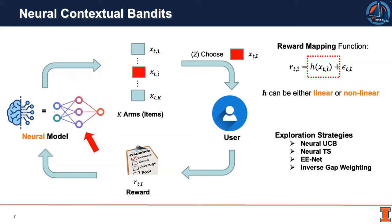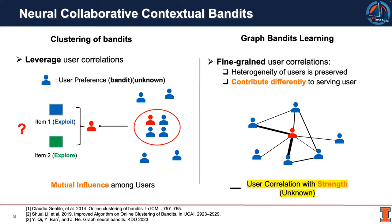In this tutorial, we will cover the recent state-of-the-art exploration strategies and show how they can adapt to personalized recommendation. Another core part of this tutorial is about the new collaborative neural contemporal boundaries, which is to leverage the knowledge of other users. We will review two directions: the clustering of boundaries and the graph-based learning.